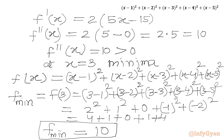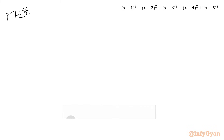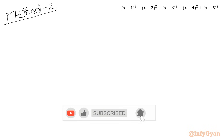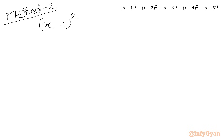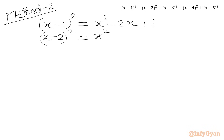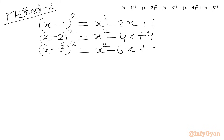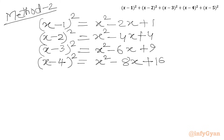This is our Method 1. Now we will solve this problem using Method 2. We expand each term: (x-1)² = x²-2x+1; (x-2)² = x²-4x+4; (x-3)² = x²-6x+9; (x-4)² = x²-8x+16; (x-5)² = x²-10x+25.